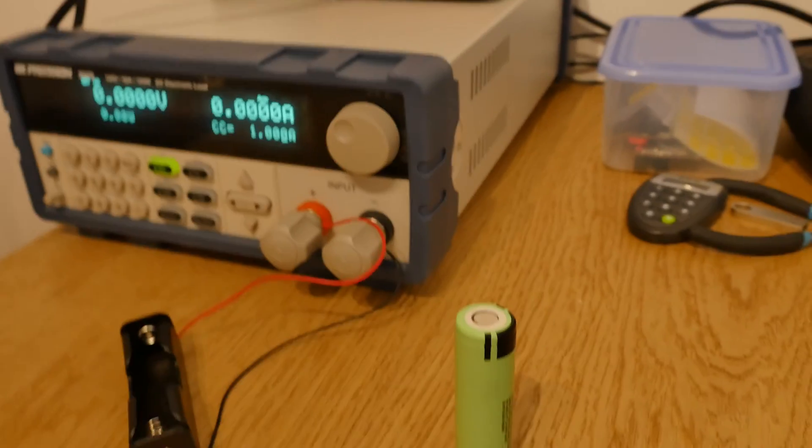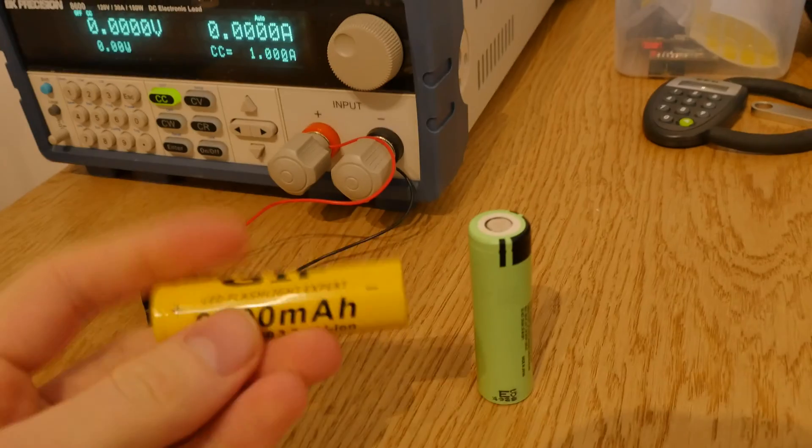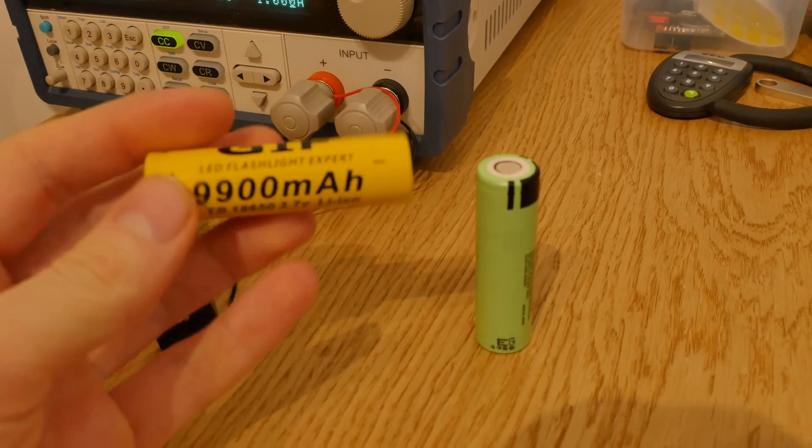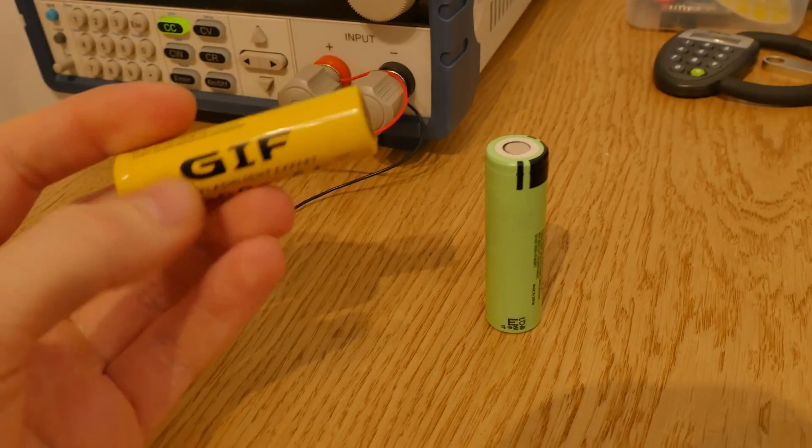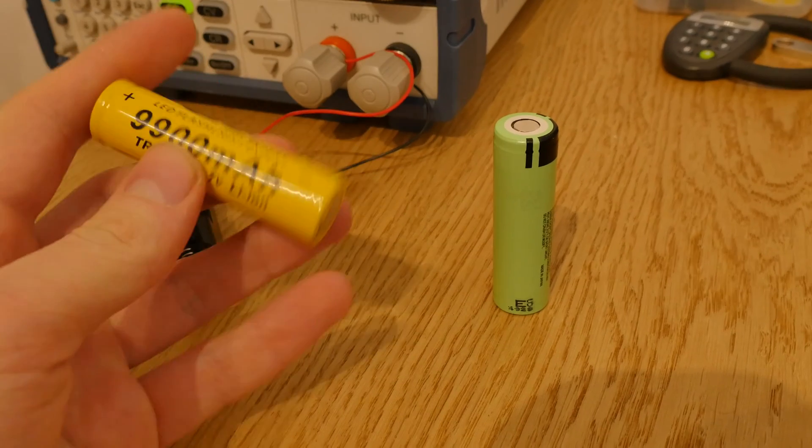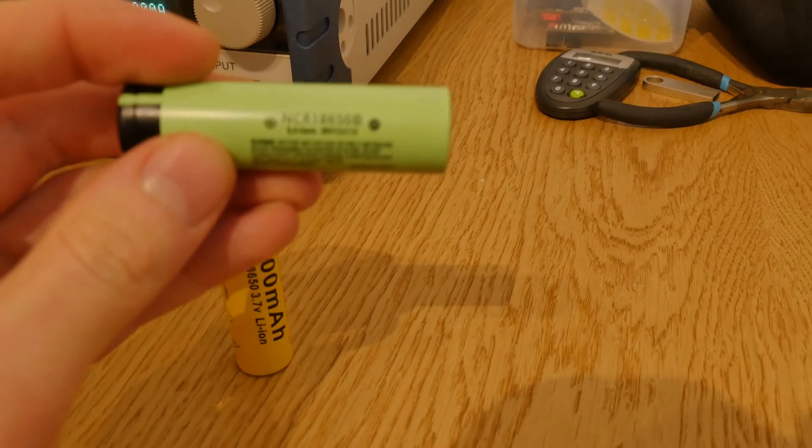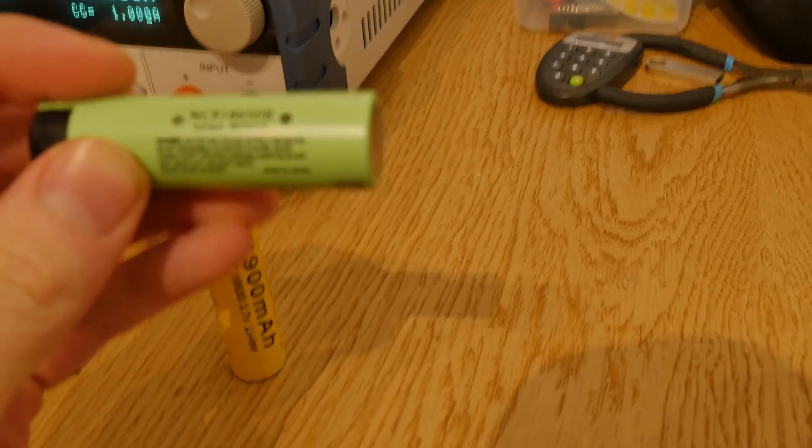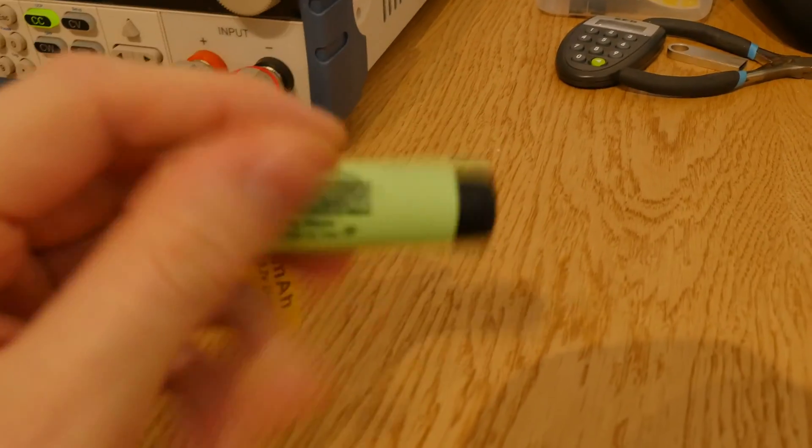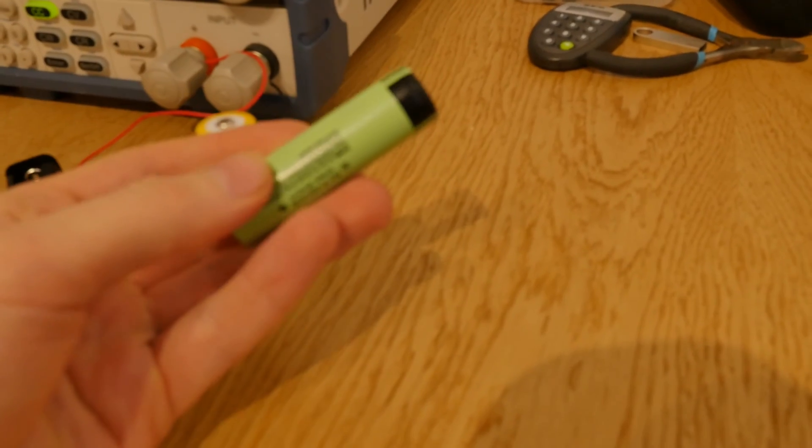But because I have an electronic load, I want to test it. And at least I'm expecting this to have like 1000 milliamp hours or maybe 2000 milliamp hours, not more. For example, this is a Panasonic battery. It's 3000 milliamp hours and I tested this and it works.